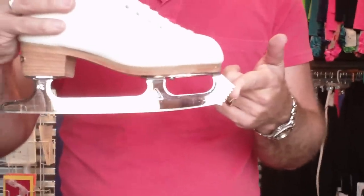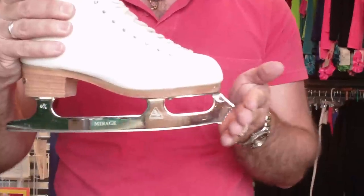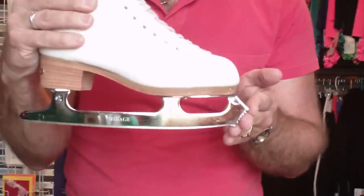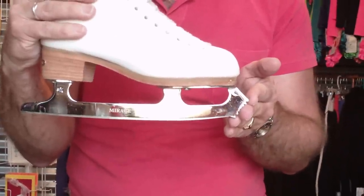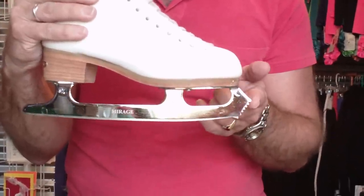Starting at the front we have the toe pick. There are different types of toe picks. Toe picks have cross cut teeth, straight cut teeth. Some blades have very small toe picks. We will have a very in-depth coverage of toe picks in another episode.